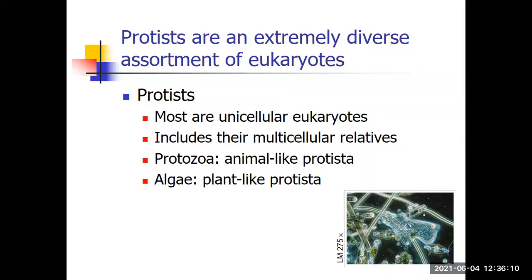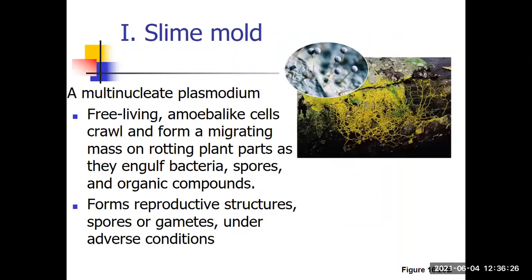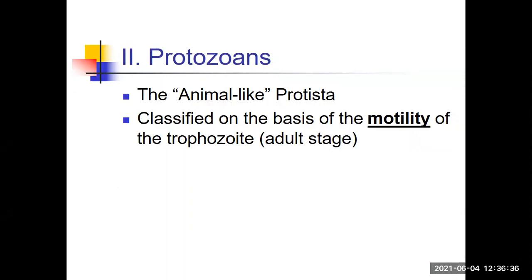The protozoans are the animal-like Protista. When we classify the protozoans, we classify them on the basis of the motility of the trophozoite — the adult stage, or 'troph' for short. We look at the adult stage and see how it moves. That's the major classification point for these animal-like Protista.